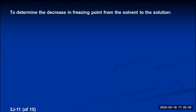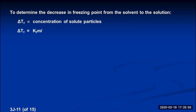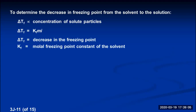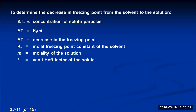To determine the decrease in freezing point from a solvent to a solution, it's proportional to the concentration of the solute particles. Converting to an equality, the colligative property equation for freezing point depression is: delta T sub f equals k sub f times m times i. Delta T sub f is the decrease in freezing point, k sub f is the molal freezing point constant specific to each liquid, m is the molality, and i is the van't Hoff factor.